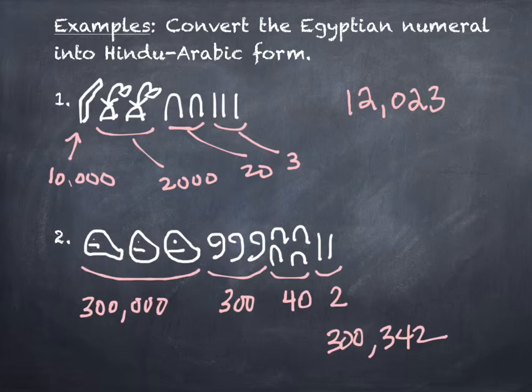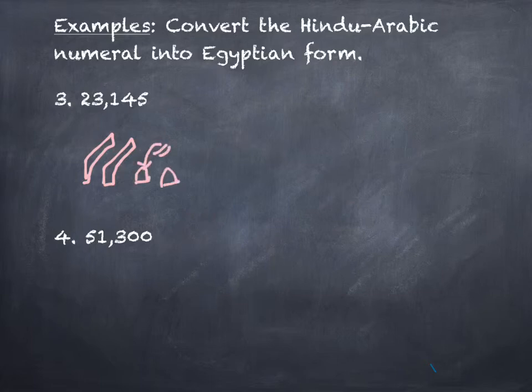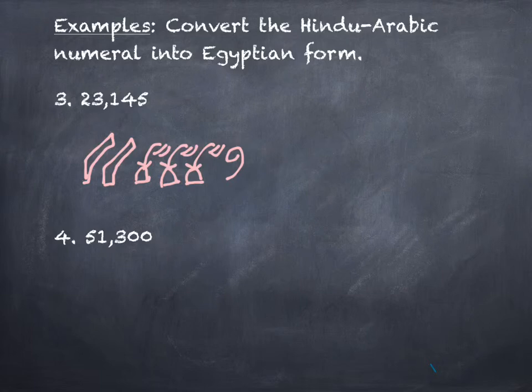We will do one more today. We're going to take one of our numbers, actually two of our numbers, and turn it into their number system. So I see that I have 23,145. How do I get the two in that 10,000th place? Two pointing fingers. How about the three? Three flowers. Just for the record, I do draw a little bit better when it's not on an iPad, but not a lot better. How about the one? It's a scroll. What's the four? Four heels. I'll stack mine. And then five staffs.